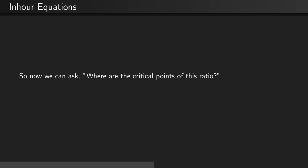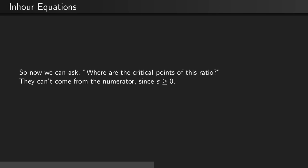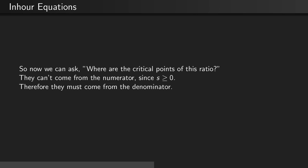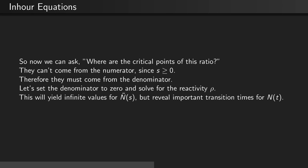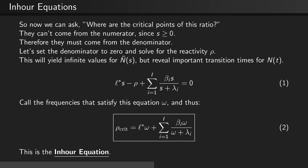Now we are able to ask where are the critical points of this ratio. They cannot come from the numerator since the frequency is always greater than or equal to zero. Therefore, any critical points must come from the denominator. Let's set the denominator equal to zero and solve for the reactivity rho. While this will yield infinite values for the Laplace transform of the neutron number density, it will reveal the transition times for various points in the neutron number density as a function of time. Therefore, we can say that the mean neutron generation time times the frequency minus the reactivity plus the sum over all groups of βᵢ times the frequency divided by (s + λᵢ) is equal to zero.